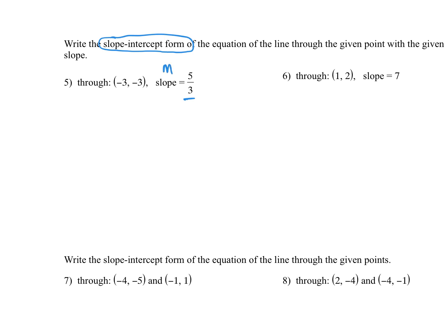But what we're given instead is a point. Let's not forget our equation. We already have the m, and my m is 5/3.